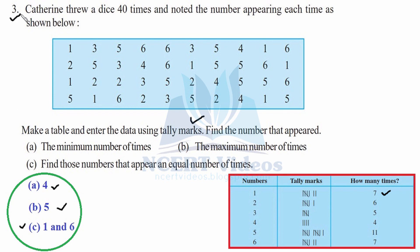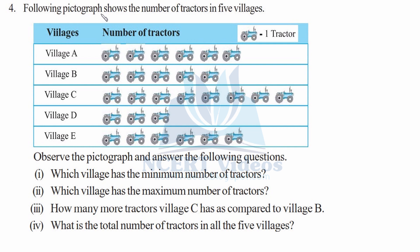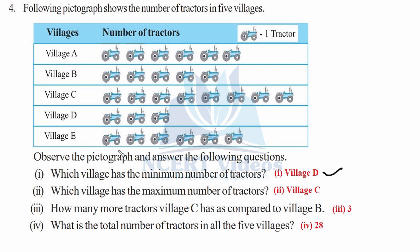Question 4: The following pictograph shows the number of tractors in five villages. Remember the key: one picture equals one tractor. We will observe the pictograph and answer the following questions. First, which village has the minimum number of tractors? Clearly visible from the pictograph, village D has only 3 tractors.